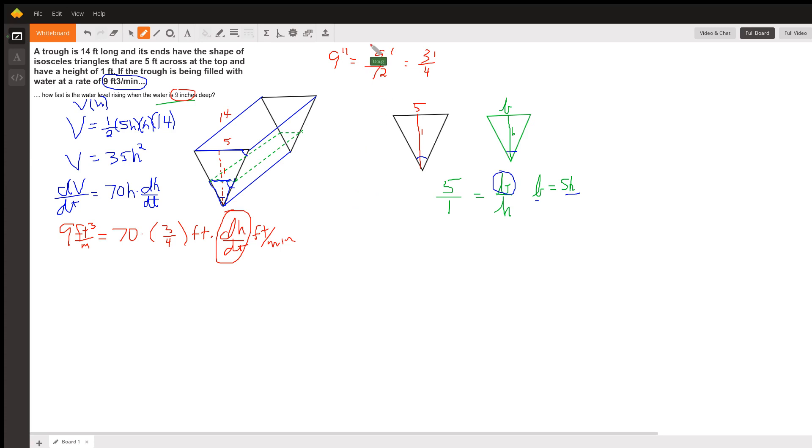okay and that will involve simplifying 70 times 3 4ths and then dividing 9 by that to isolate dh dt so we're over the 5 minute mark I'm going to end the video there and leave that we've got a number to use this value right here and we have to do that I think we get an answer of 6 35ths feet per minute.